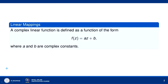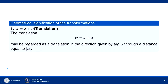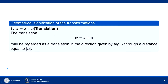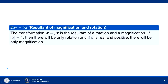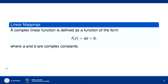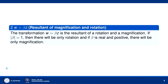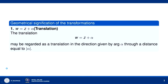If you look at f(z) = az + b, it consists of two transformations. The first transformation is the translation and the next transformation is the resultant of magnification and rotation. This f(z) = az + b is actually a composition of two transformations: one is w = z + α and the other is w = βz. Let us see the geometrical significance of w = z + α.